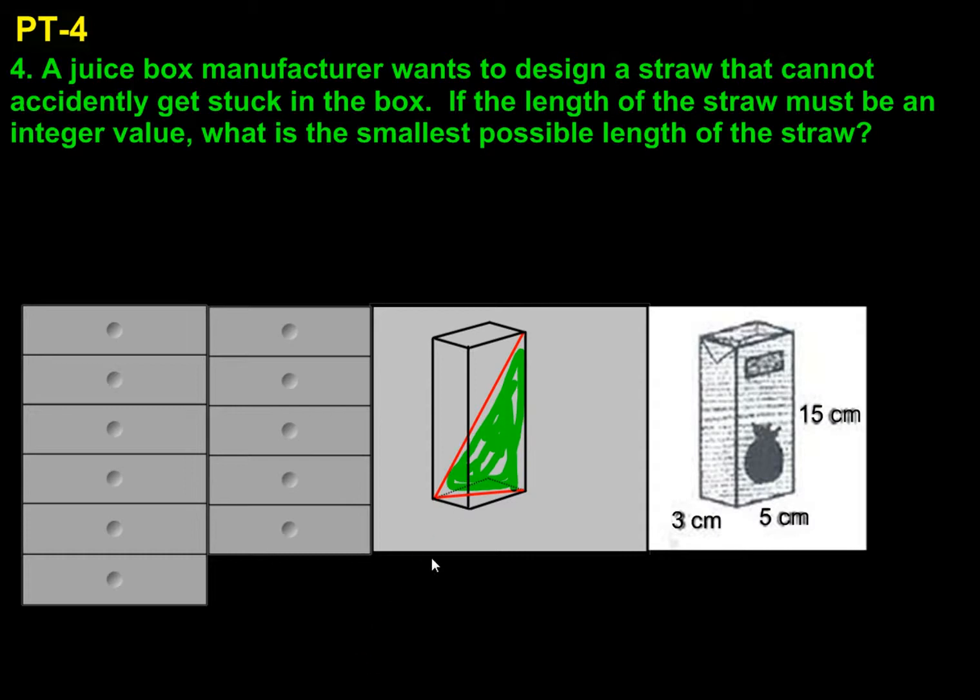The problem is this bottom length, this leg. We know that's 3 centimeters, this side is 5 centimeters, and the side of the box is 15. We don't know this leg. So we have a smaller triangle, of which that would be the hypotenuse, that we need to find before we can find the large triangle. So we'll start with that.